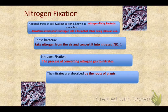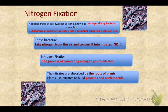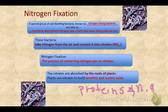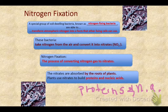The nitrates are absorbed by the roots of plants, and the plants use the nitrates to build proteins and nucleic acids. Then, once the plants have that usable form, we eat the plants and we can use their usable form to build our own proteins and nucleic acids.